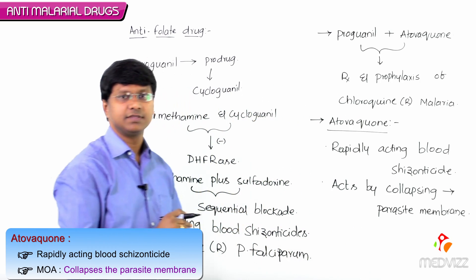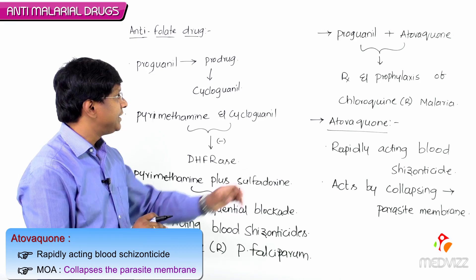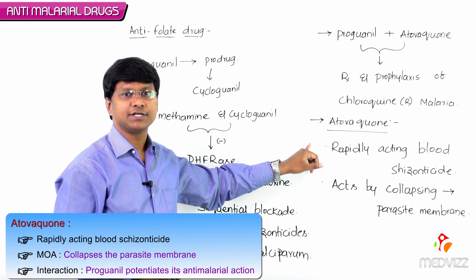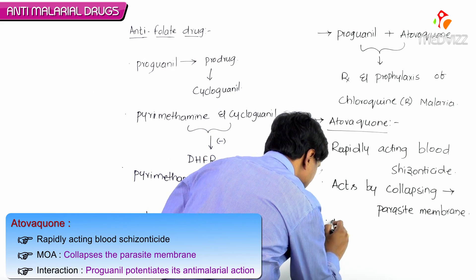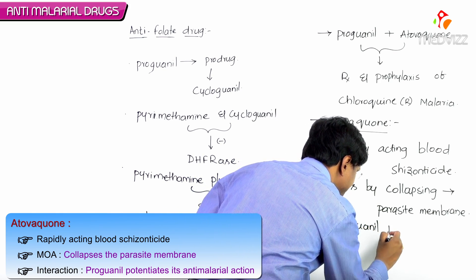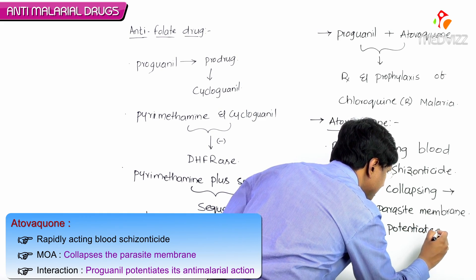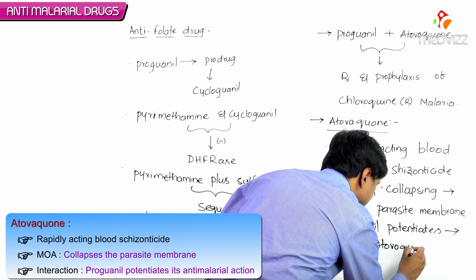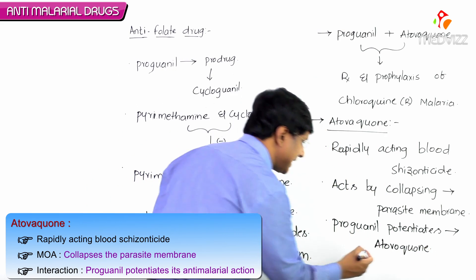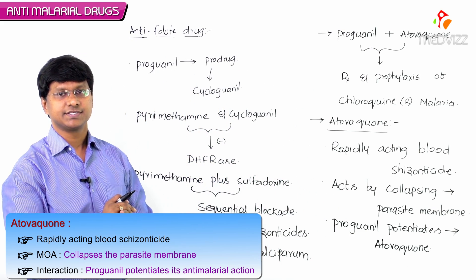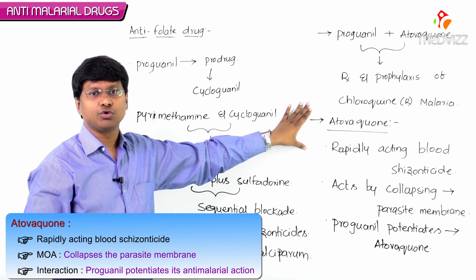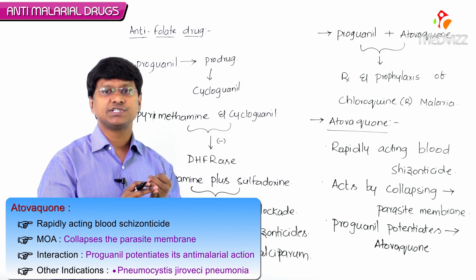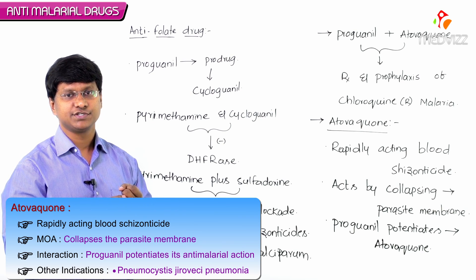When you add proguanil to atovaquone, proguanil potentiates the anti-malarial action of atovaquone. Another important point is that atovaquone can also be used not only in malaria, but also for Pneumocystis jirovecii pneumonia as well as Toxoplasma gondii infections.